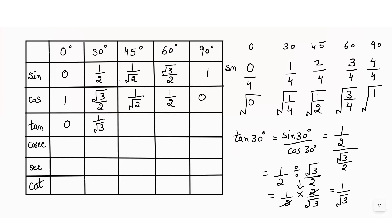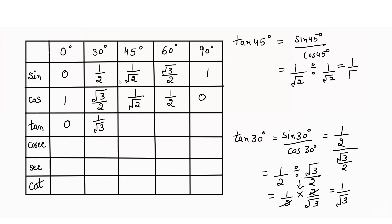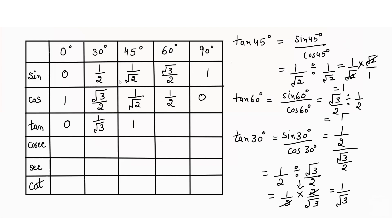For tan 45°: sin 45 / cos 45 = (1/√2) / (1/√2) = (1/√2) × (√2/1) = 1. For tan 60°: sin 60 / cos 60 = (√3/2) / (1/2) = √3/2 × 2/1 = √3. For tan 90°: sin 90 / cos 90 = 1/0, which is undefined.